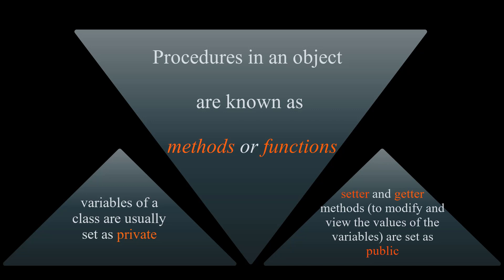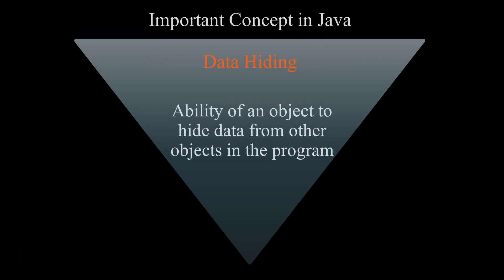Usually the variables of a class are set as private, and then we have public setter and getter methods to modify and view the values of those variables. Data hiding is an important concept in Java — it is the ability of an object to hide data from other objects in the program, because only an object's own methods should be able to directly manipulate its data.